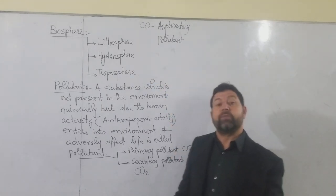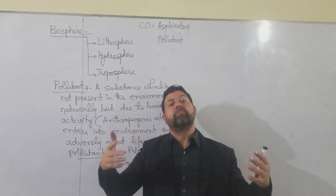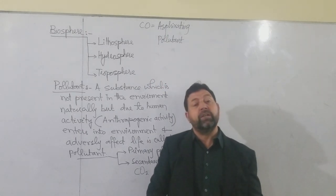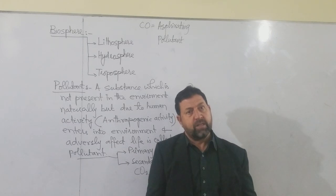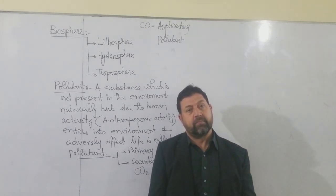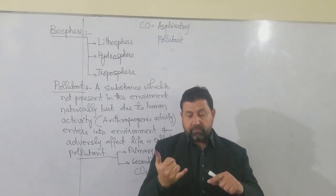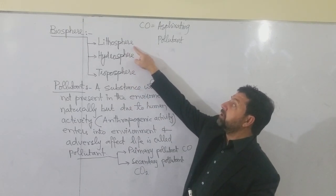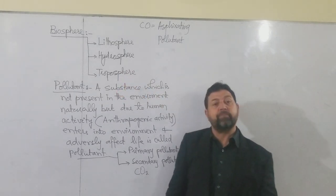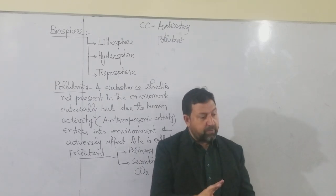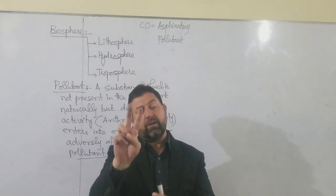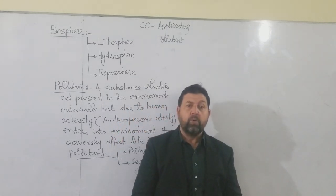Pollutant ان environmental components کی natural composition disturb کر رہا ہے — یہ components ناپاک ہوتے جا رہے ہیں۔ Lithosphere کے pollution کو Soil Pollution، Hydrosphere کے pollution کو Water Pollution، اور Troposphere کے pollution کو Air Pollution کہتے ہیں۔ ہمارے course میں صرف دو ہیں: Air Pollution اور Water Pollution۔